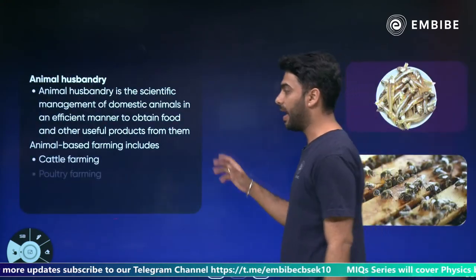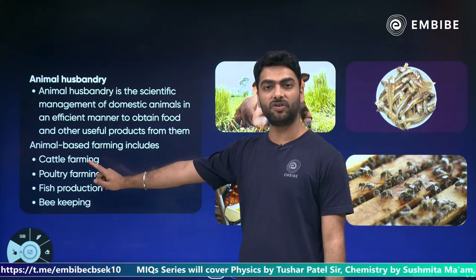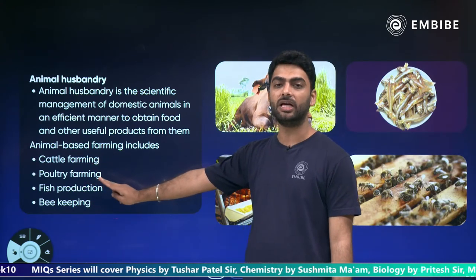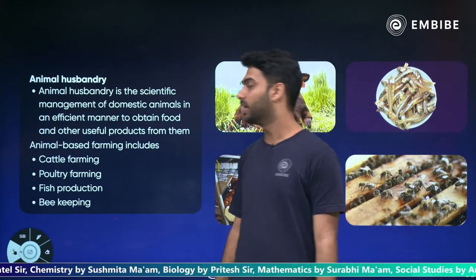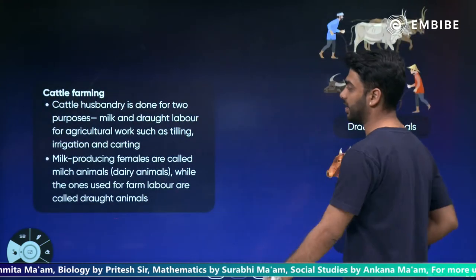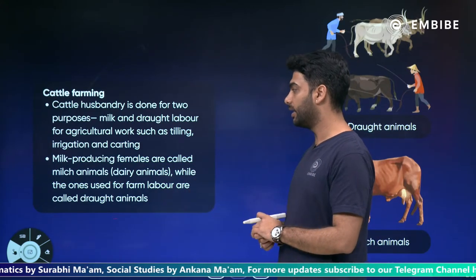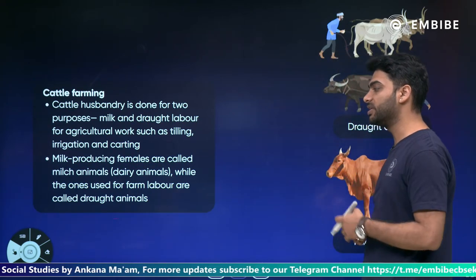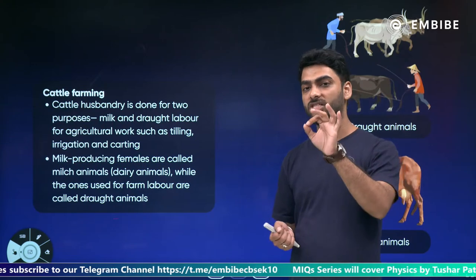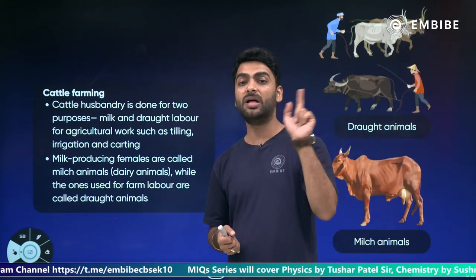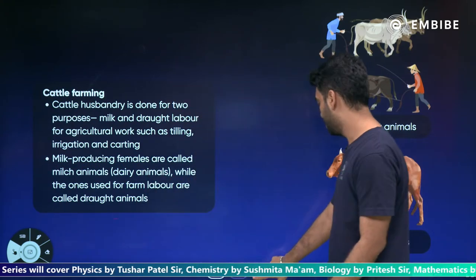Animal husbandry has four areas: cattle — for milk and milk products; poultry — for chicken meat and eggs; fish production — for fish meat and fish oil; and bee keeping/apiculture — for honey and beeswax. In cattle farming, milk-producing females are called milk animals, while those used for labor (tilling, irrigation, carting) are called draught animals — spelled D-R-A-U-G-H-T.